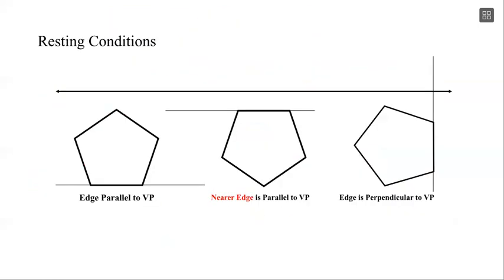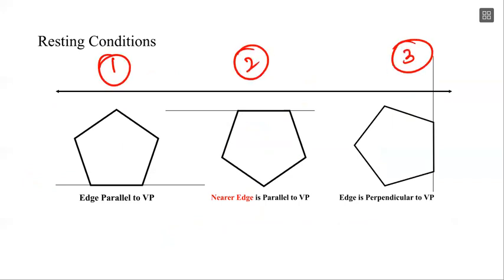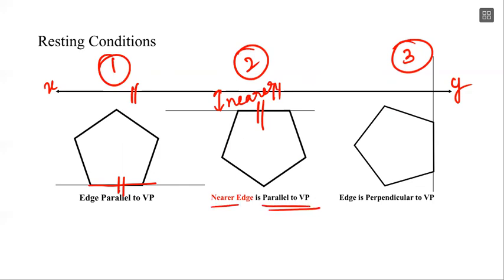How to solve this problem? Normally when we start to draw the pentagon, there are three different resting conditions: condition number 1, condition number 2, and condition number 3. In this case, one of the base edges is parallel to VP. The pentagon has one edge that has to be parallel to VP and parallel to the XY line. The edge is parallel and nearer to the axis.